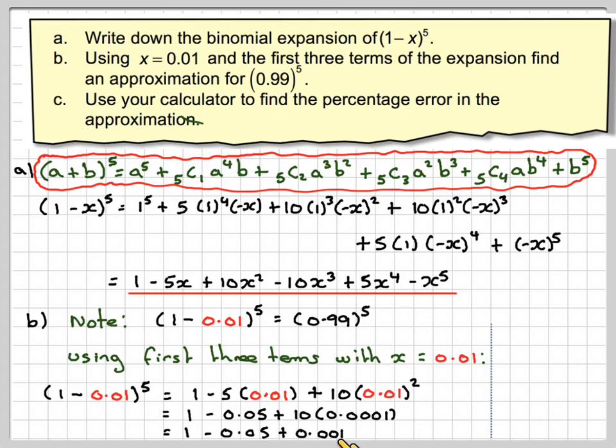So we've got 1 minus 0.05 plus 0.001 and that comes to 0.951. So we're using that as an approximation for 0.99 to the power of 5.